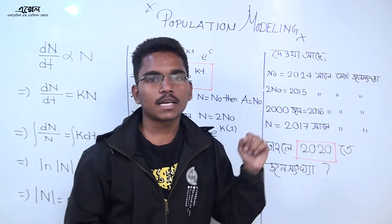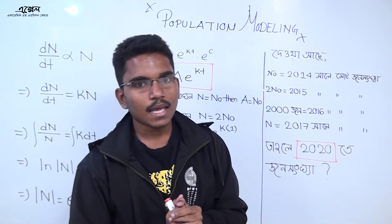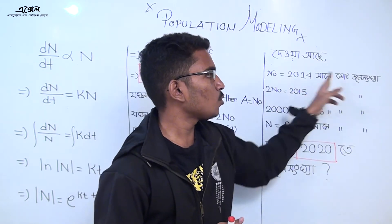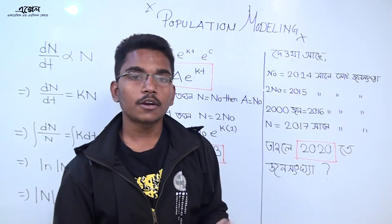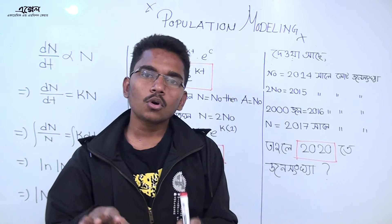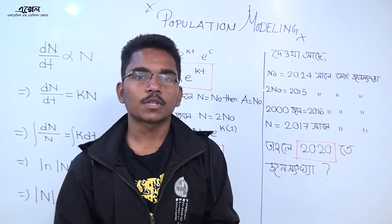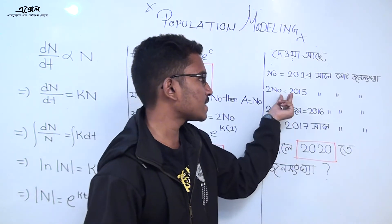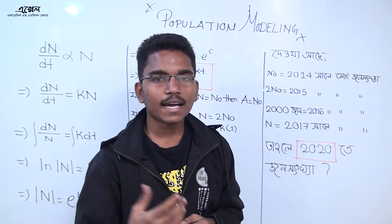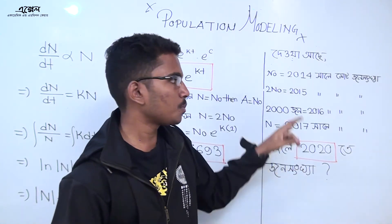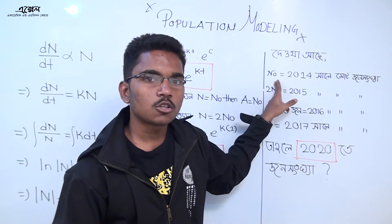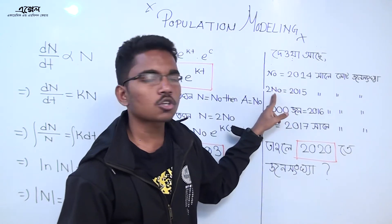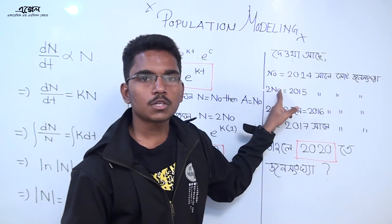In 2014, the first generation is n0. What is n0? The first generation is n0, and the second generation is also labeled n0. One generation is n0.